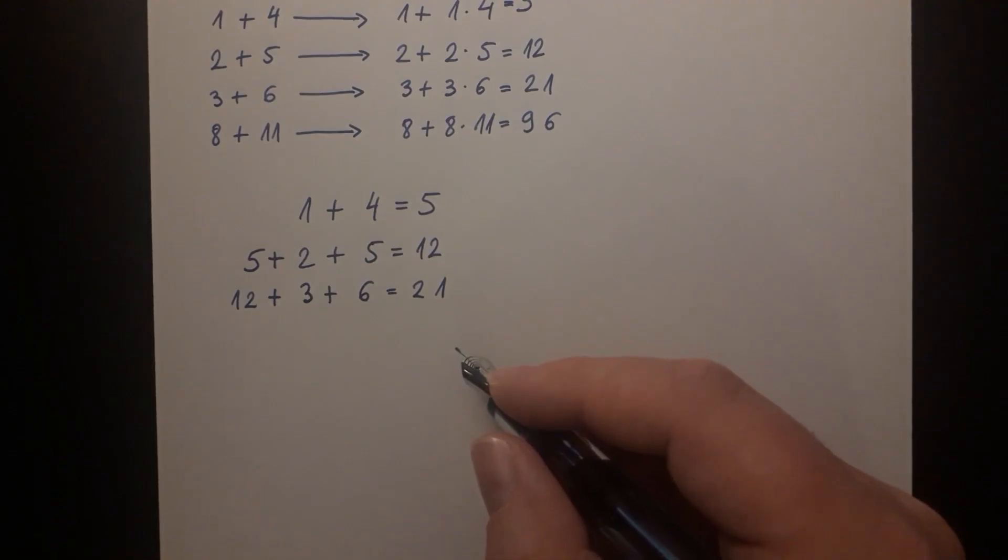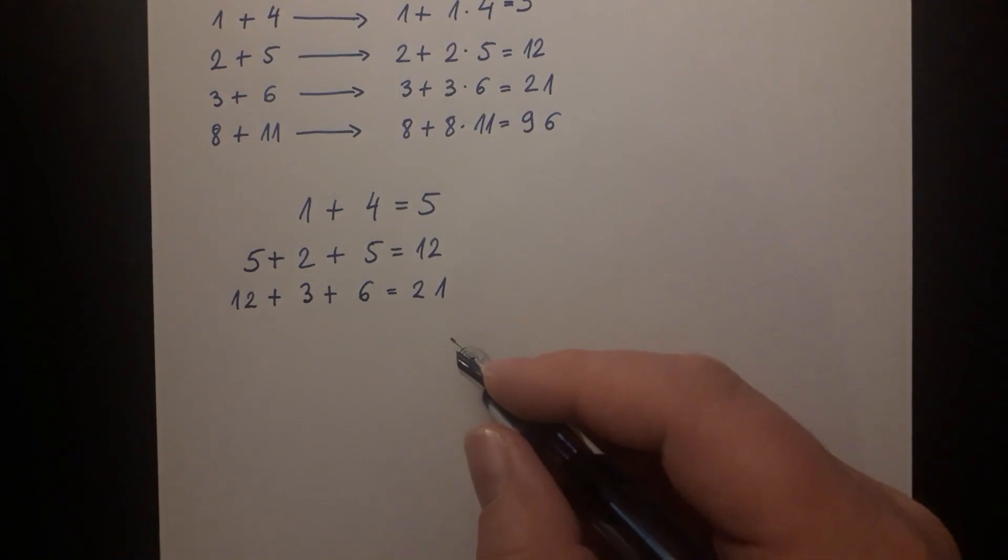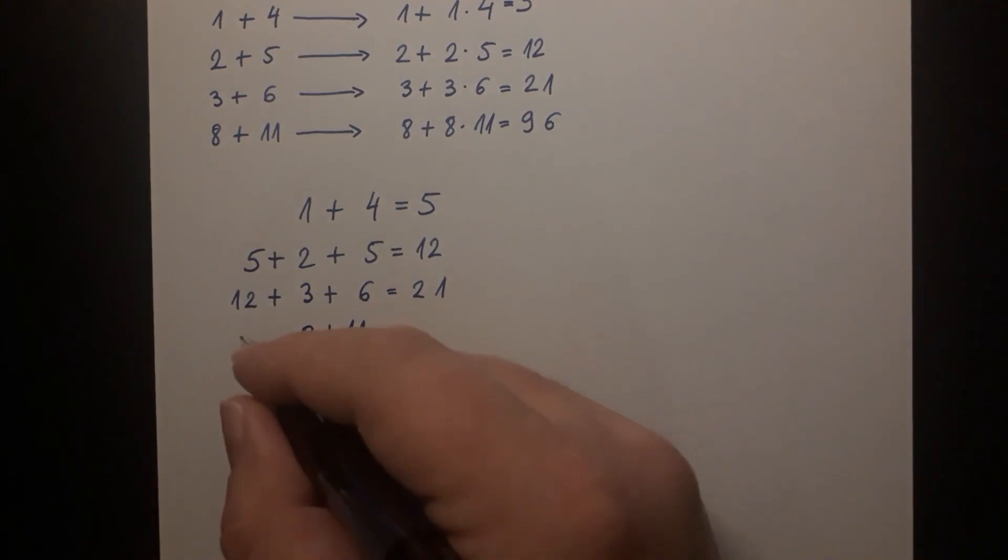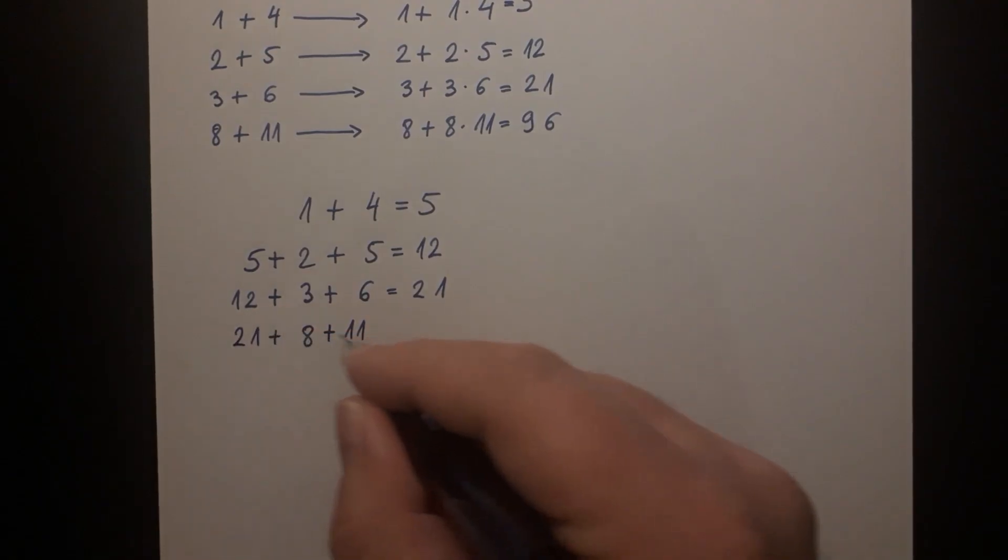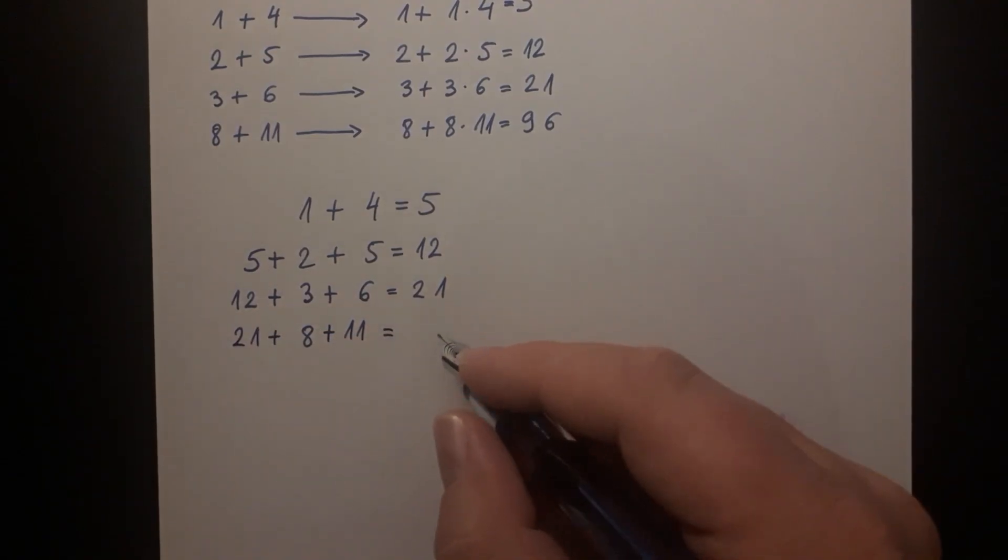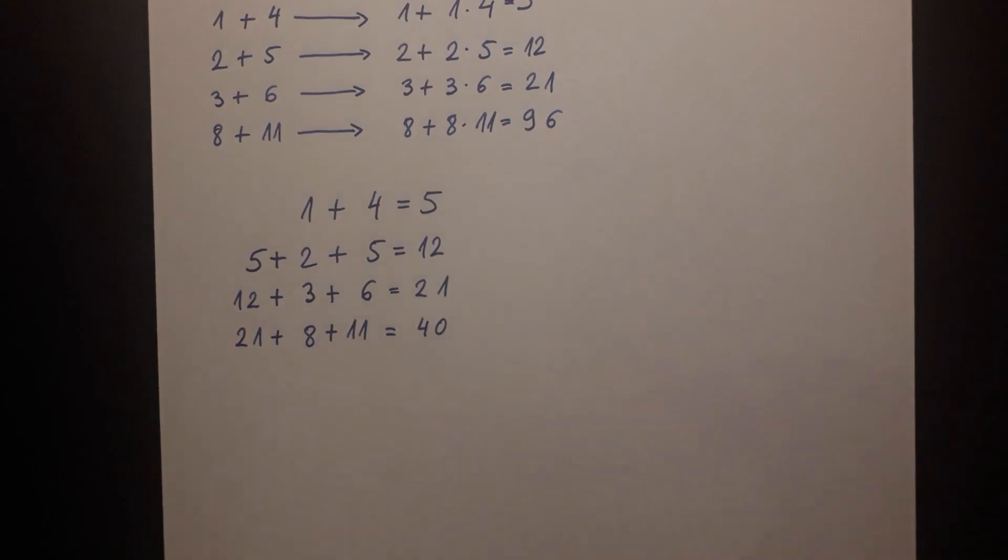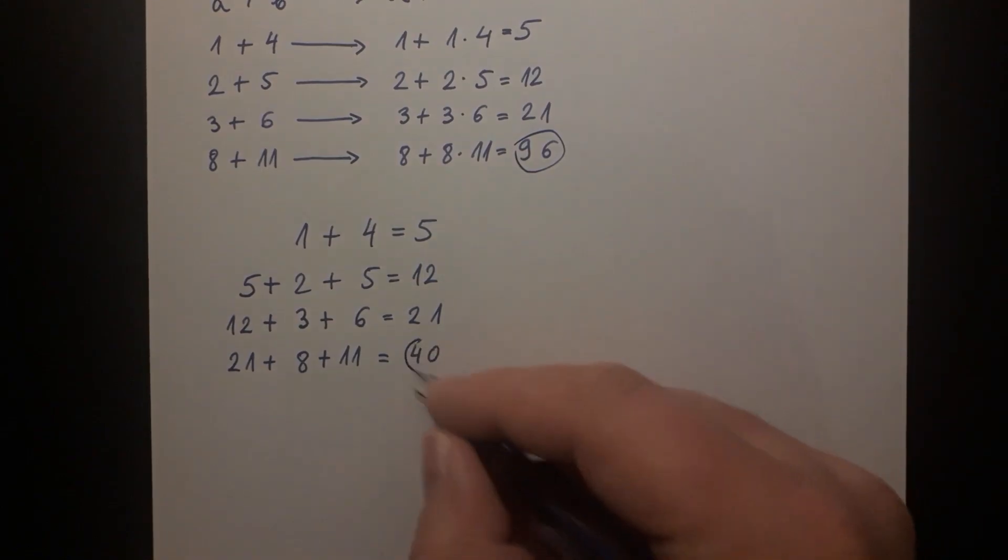By continuing this pattern we are going to add 21 to 8 plus 11. 21 is the result of the previous line and in this manner we get 40 as a result. Note that many people are now debating whether the answer should be 96 or whether it should be 40.